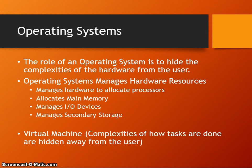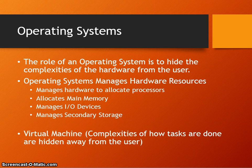Operating systems are a fundamental part of system software. The role of an operating system is to hide the complexities of the hardware from the user. The operating system manages hardware resources: it manages the hardware allocated to processes, allocates main memory, manages input and output devices, and manages secondary storage. So an operating system has two roles: hiding hardware complexity from the user, and managing hardware resources.